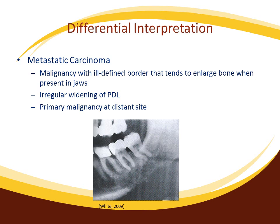Metastatic carcinoma is the third differential diagnosis. Its radiographic presentation is much like osteosarcoma, with an ill-defined border and a tendency to cause enlargement of bone. However, widening of the periodontal ligament seen in osteosarcoma contrasts with the irregular extension up the side of the root seen in metastatic carcinoma. Additionally, metastatic carcinoma can be distinguished by the presence of a primary malignancy at a distant site. In this pantomograph section, a metastatic breast carcinoma surrounding the apical half of the second and third molar roots has destroyed the inferior border of the mandible.